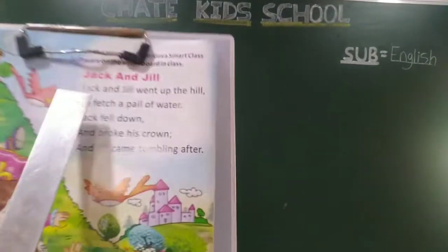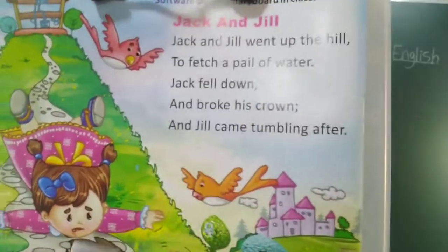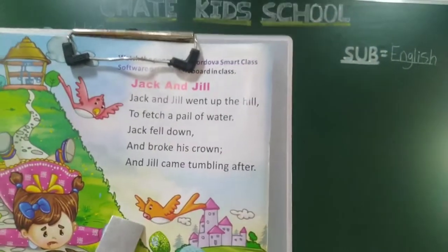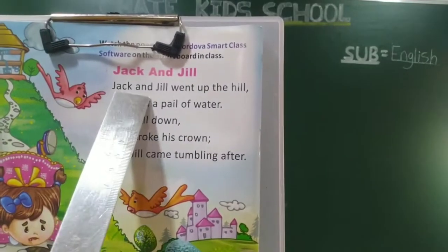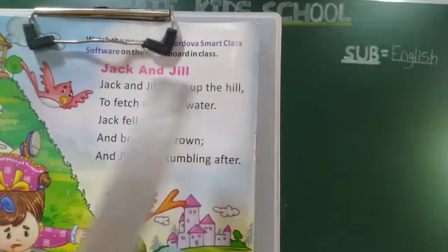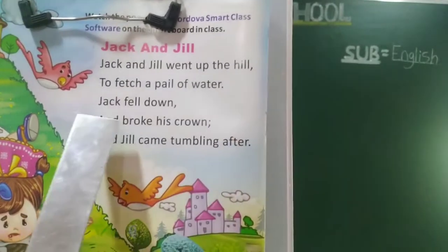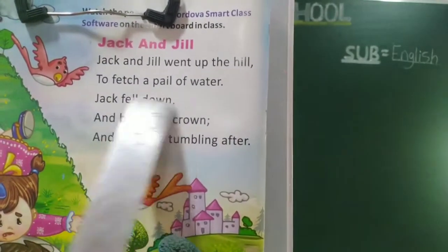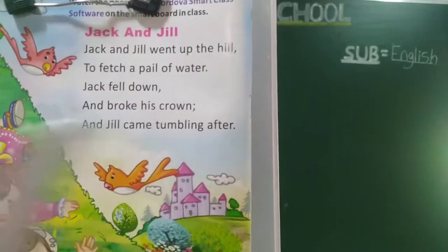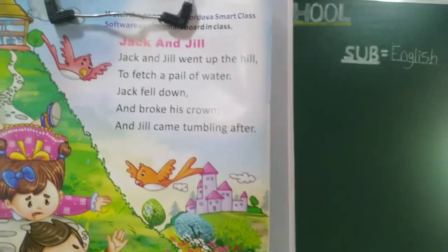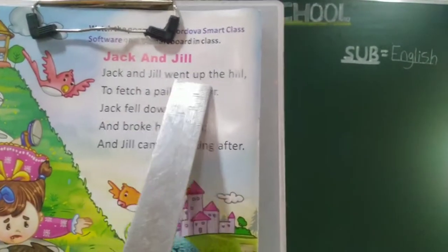Jack and Jill — okay, one second, poem read. Jack and Jill went up the hill to fetch a pail of water. Jack fell down and broke his crown, and Jill came tumbling after. Jack and Jill kai galila head.